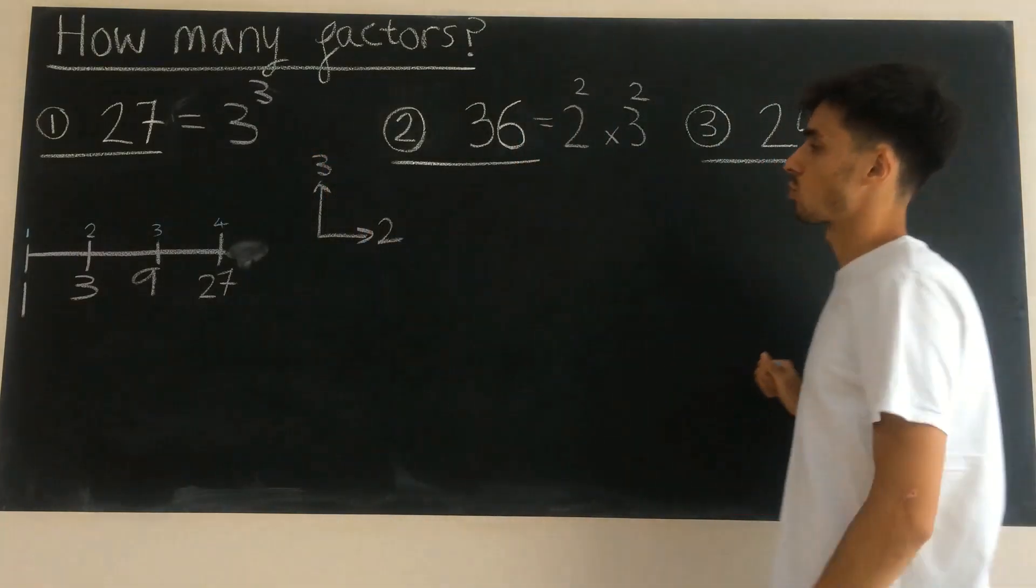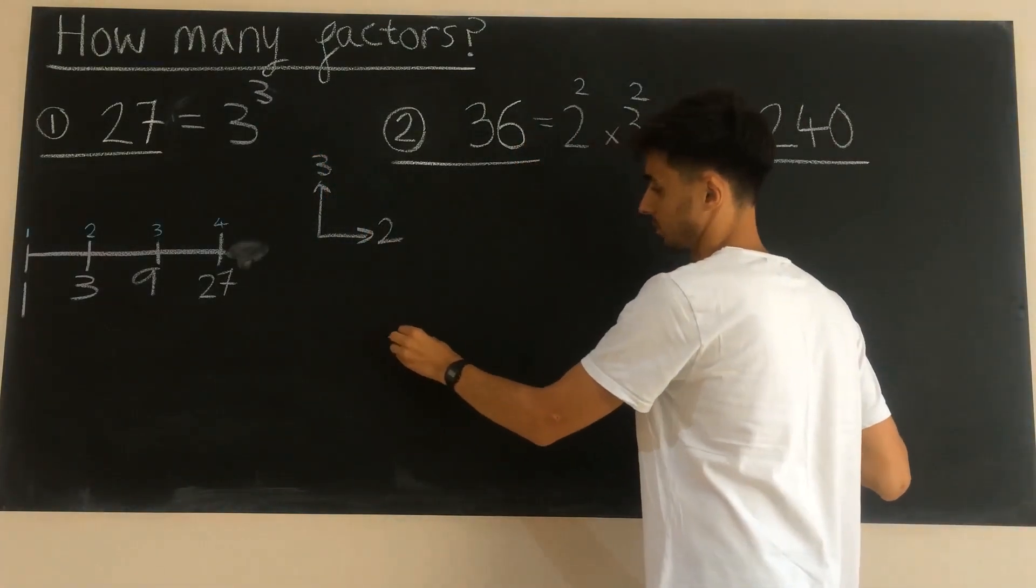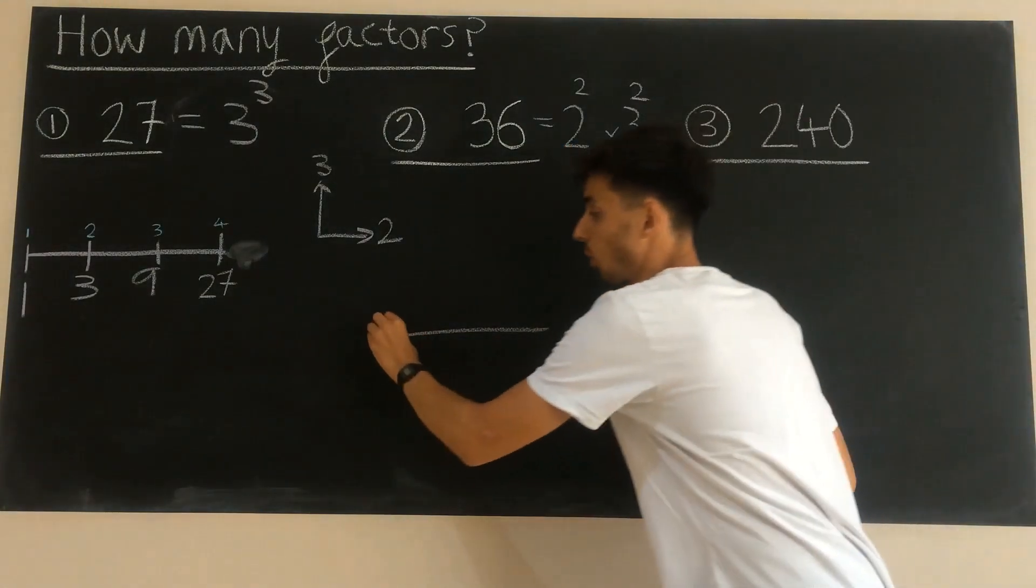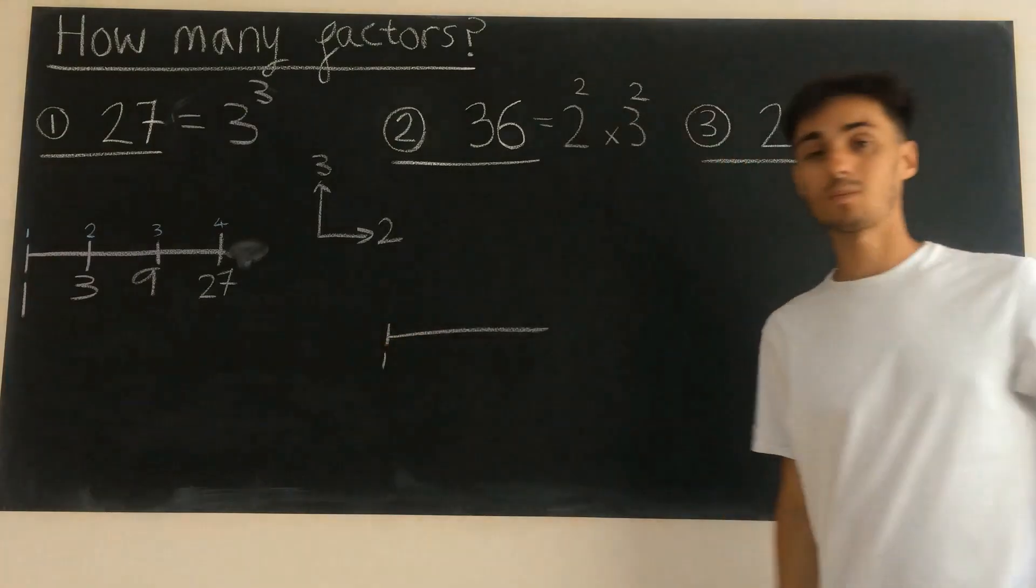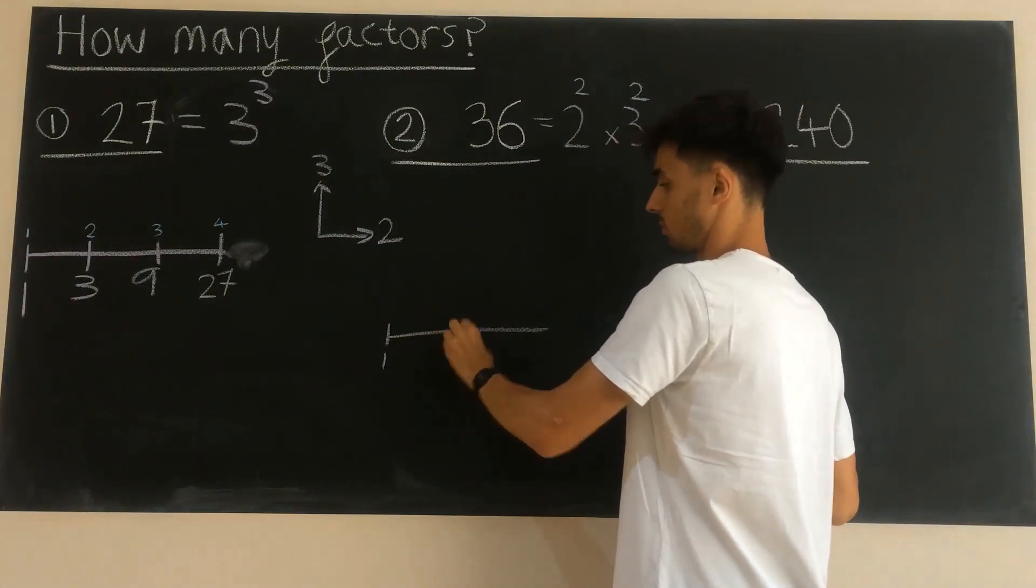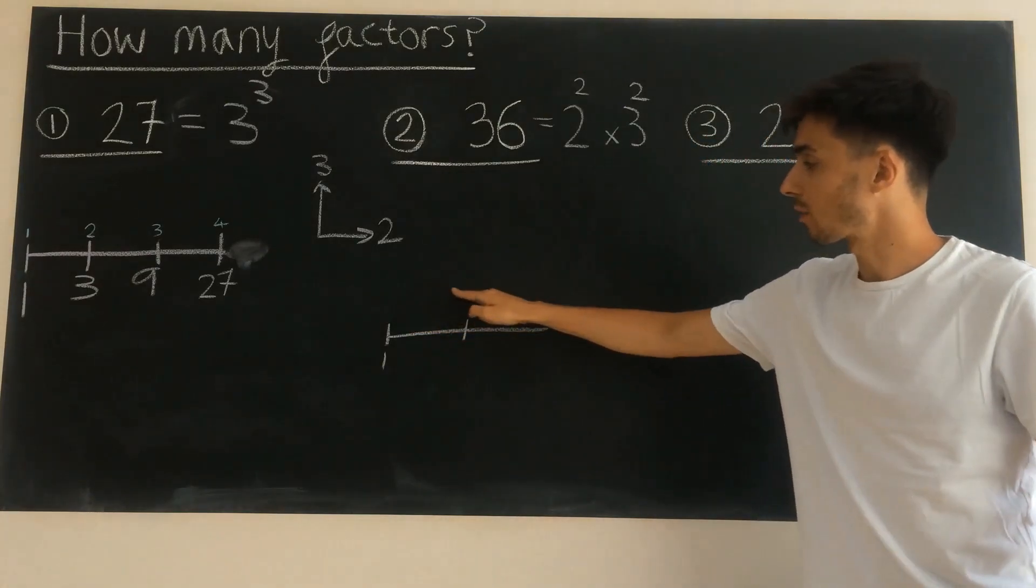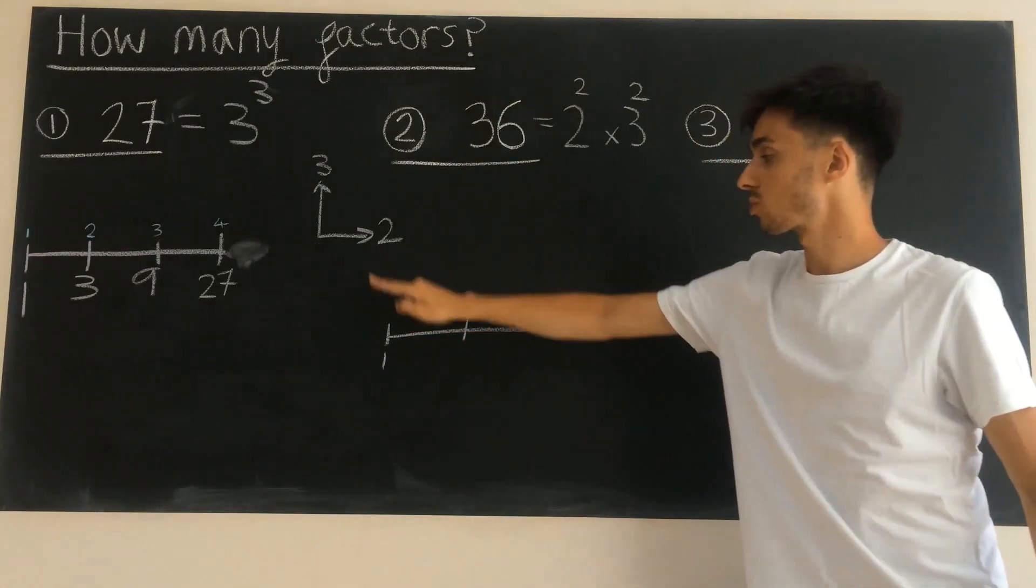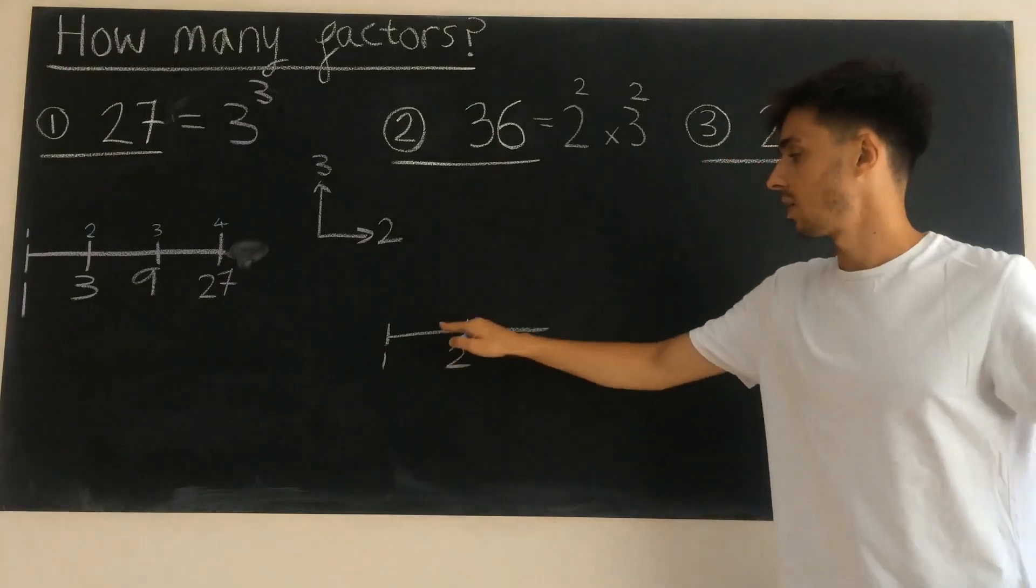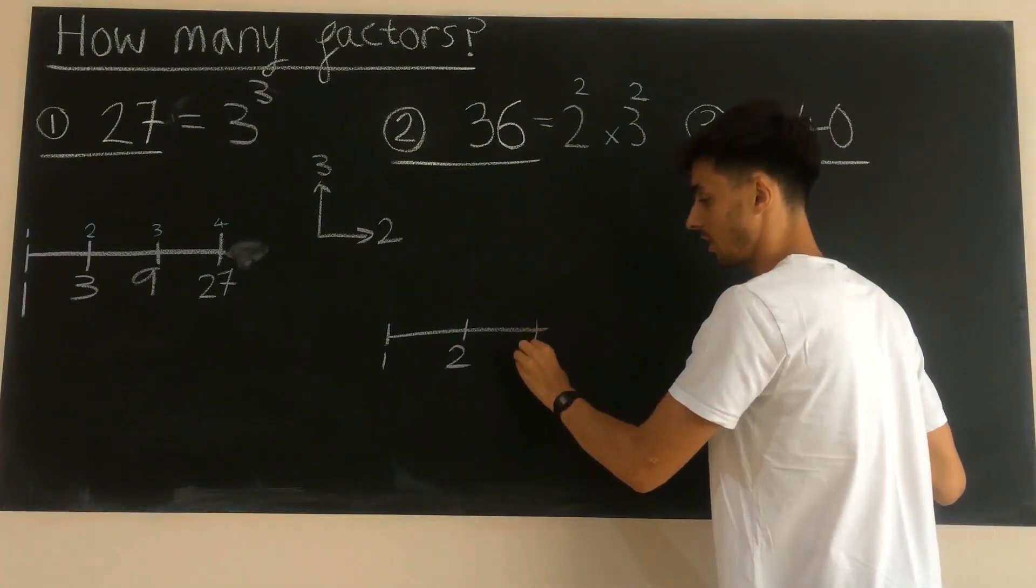So now when I draw my number line, my 2 to the power of 2, well I always know that I start with 1. And when I go to 2 to the power of 1, because coming along to the right is my 2 axis, I'm going to get 2, and then times by 2 again, I get to 4.